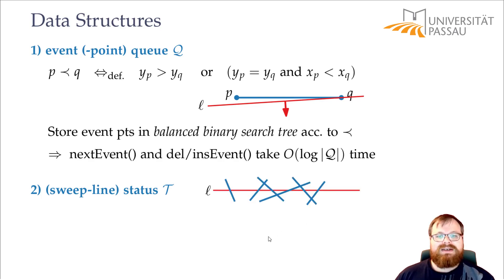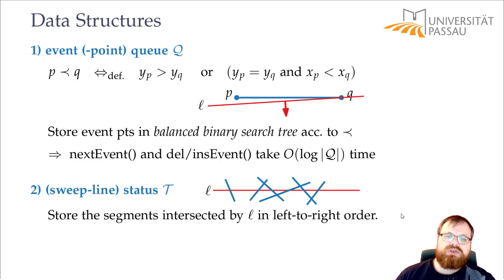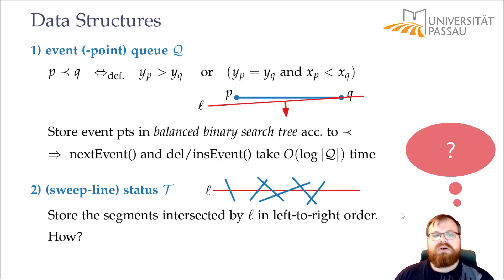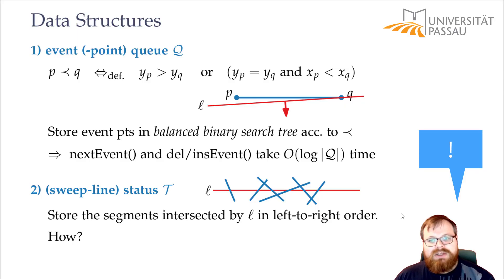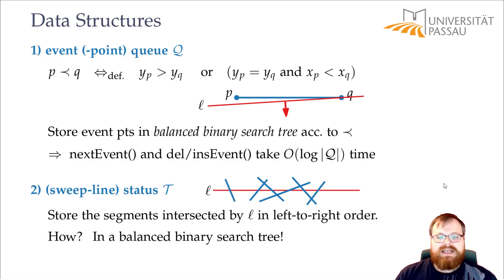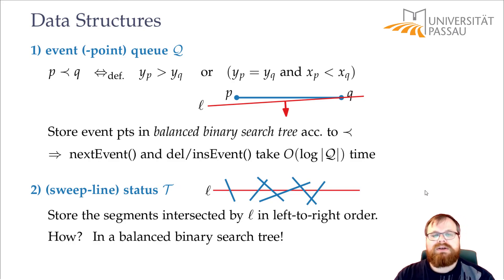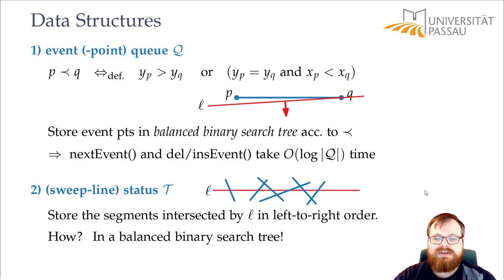For the sweep line status, we again use a balanced binary search tree. We put all the active segments in it, ordered by their intersection with the sweep line. We have the same running times as before: we can insert and remove segments in time logarithmic in the size of the sweep line status. We can also easily change the order between two neighboring segments in the balanced binary search tree.